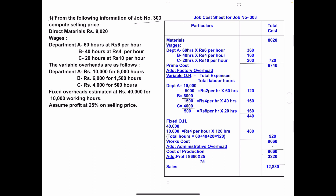Let's start the solution. Heading: job cost sheet for job number 303. Particulars and total cost. First, we have to take direct material. Material — total cost column amount: 8020.